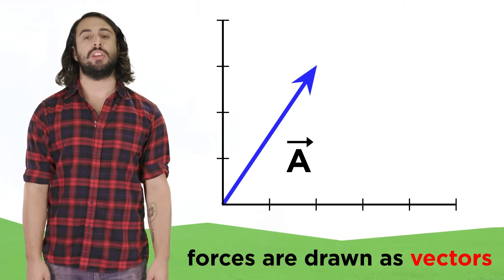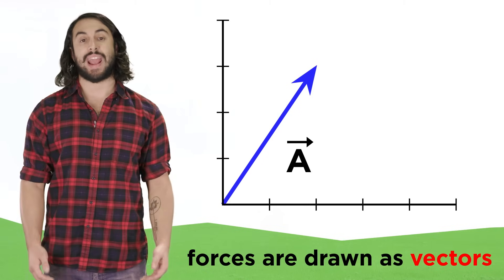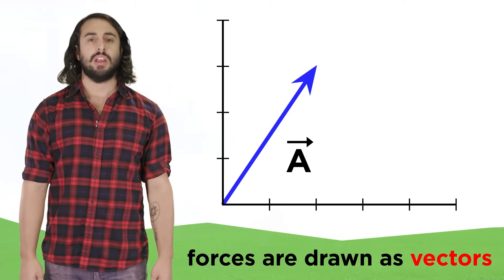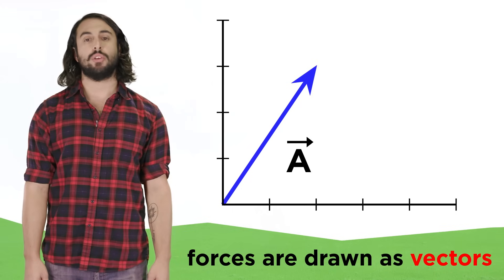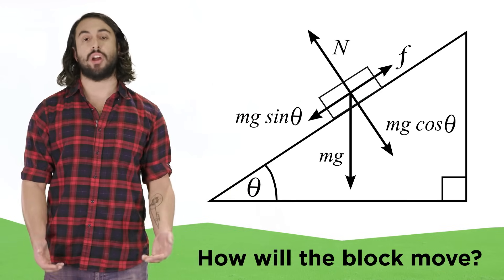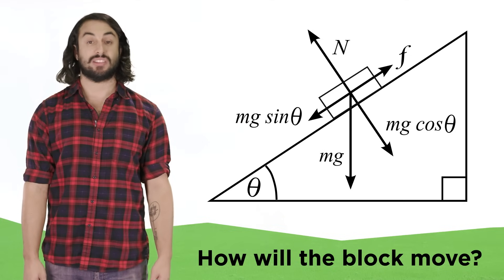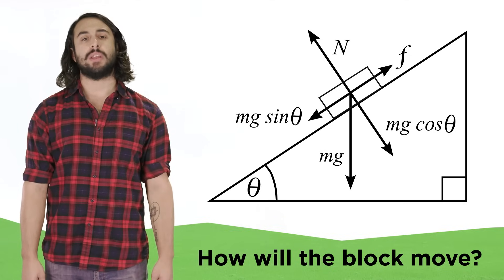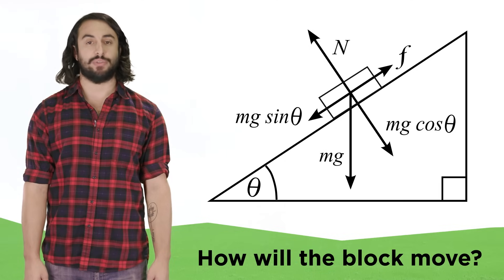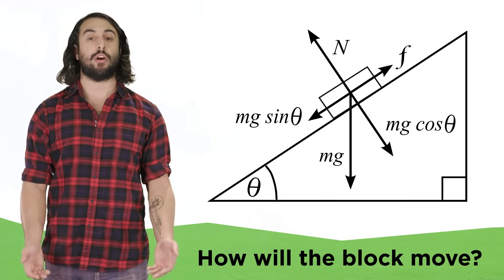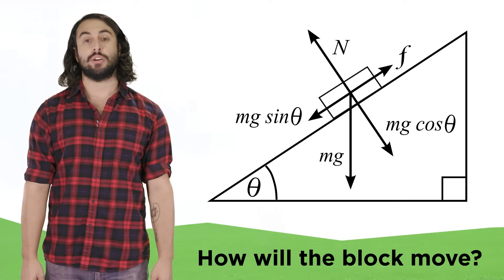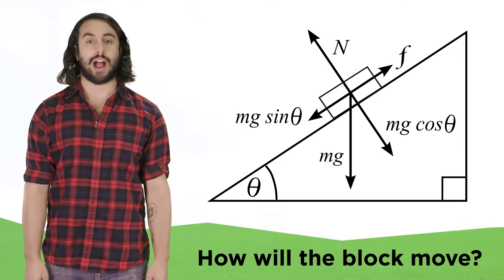To denote vectors, we usually use letters in bold font with an arrow on top. As we learn more about physics, we will use vectors to predict the motion of objects, and if there are several forces acting on an object, as there often are, we will need to be able to do certain operations with vectors in order to perform our calculations. So let's learn how to do simple vector operations.